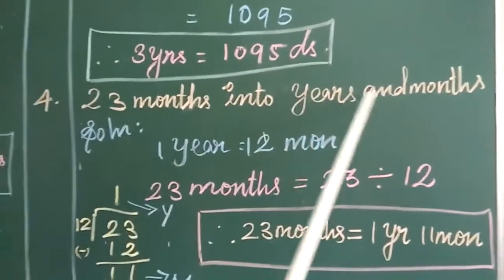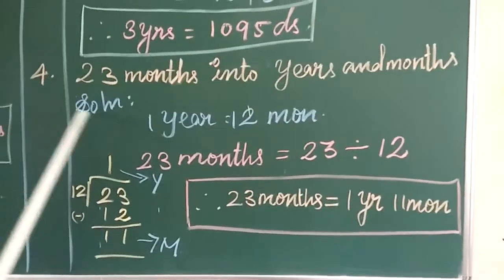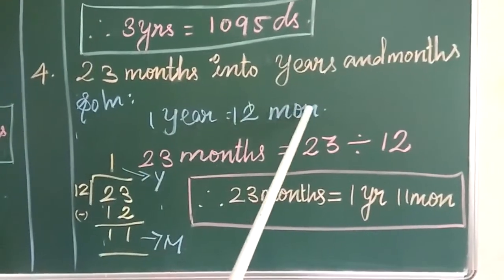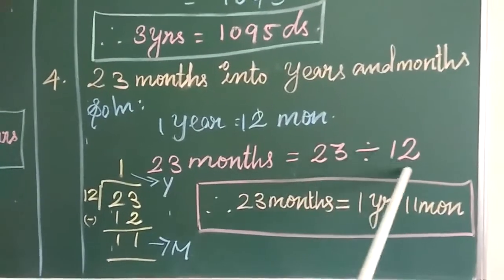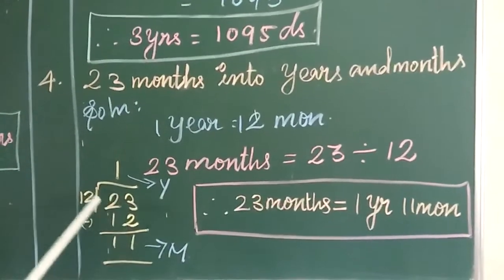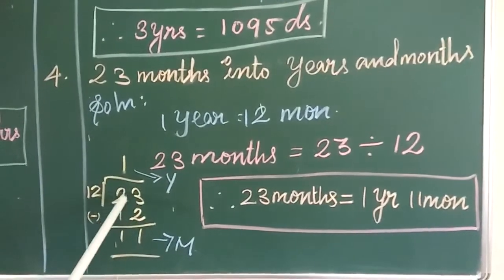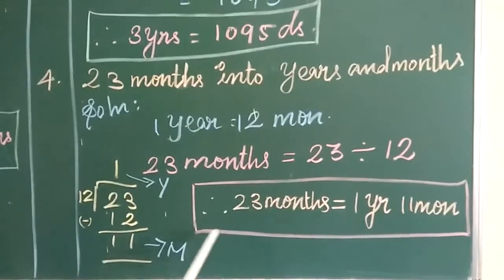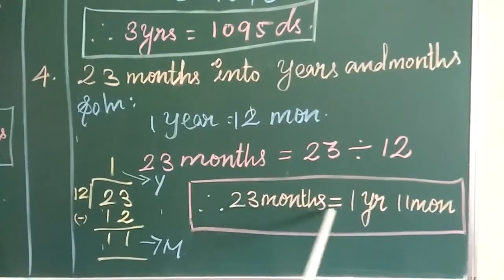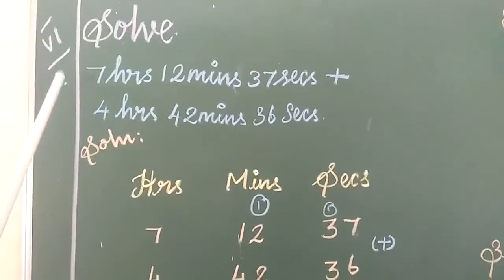The next fourth sum, 23 months into years and months. Small to big, divide. Solution: 1 year is equal to 12 months. So 23 months is equal to 23 divide 12. Let's do the division. 1, 12 is 12. Minus, 3 minus 2, 1. 2 minus 1, 1. Quotient is the year, remainder is the month. So 23 months is equal to 1 year, 11 months.